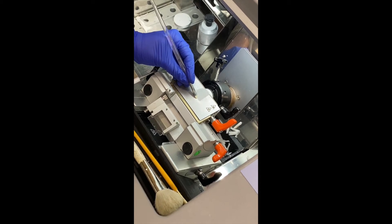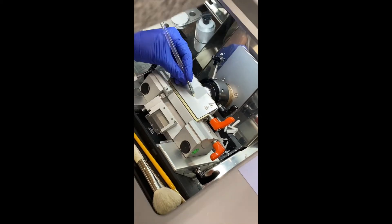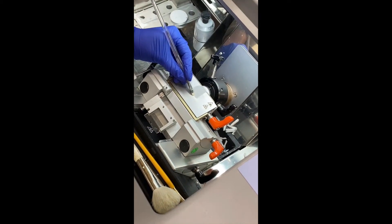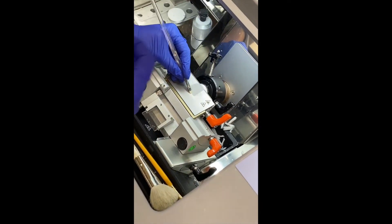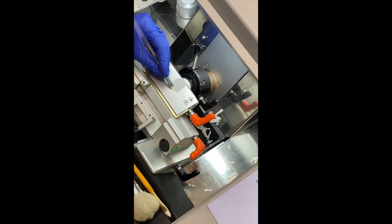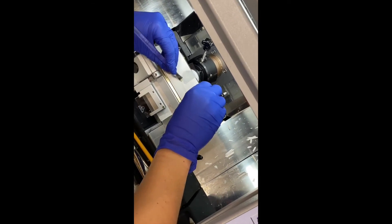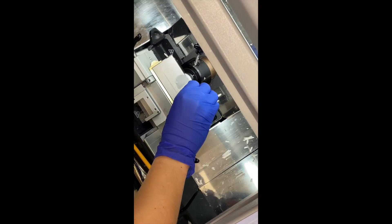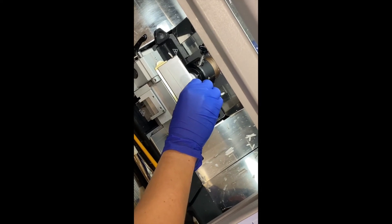When the specimen has been entirely cut, use your brush to stabilize the specimen in place so it doesn't roll back upon itself. Remove your brush, grab your slide, and use your slide to pick up the portion of tissue that was just sectioned.